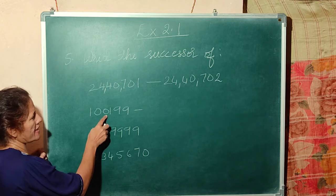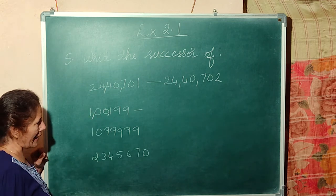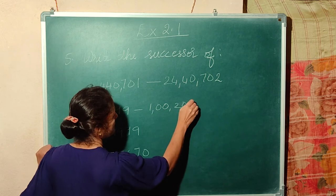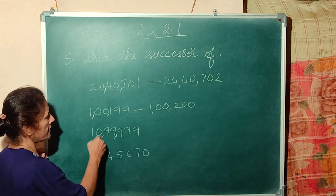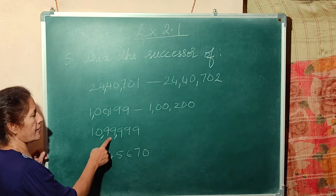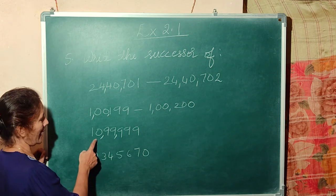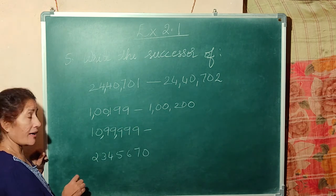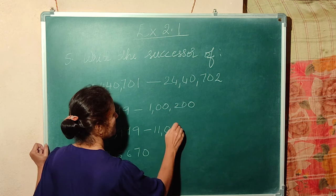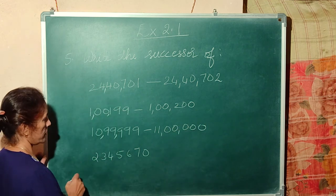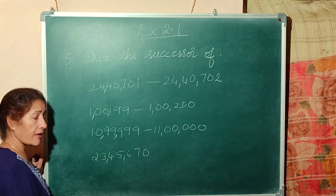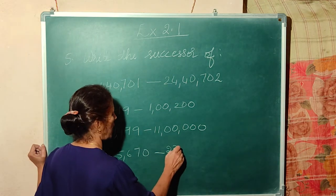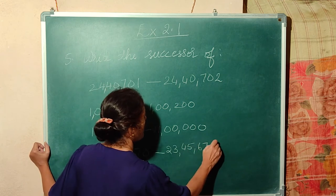Next. What is this number? 1,199,000. What is the successor? 1,200,000. What is this number? 10,99,999. Can you tell me what is the successor? 11,000,000. What is this number? 23,000,000,000. 45,670. What is the successor? 23,000,000,000,45,671.